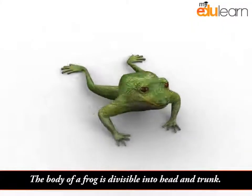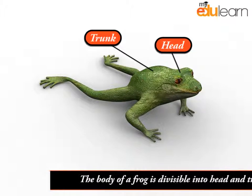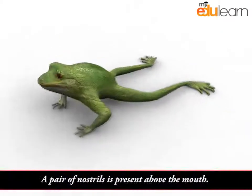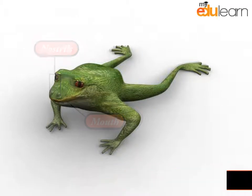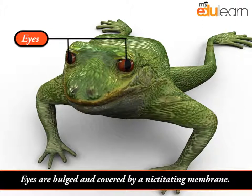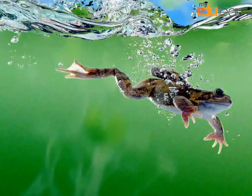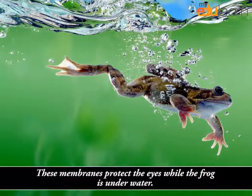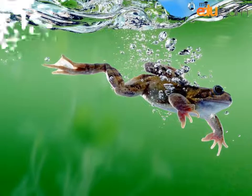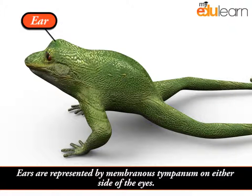The body of a frog is divisible into head and trunk. A pair of nostrils is present above the mouth. Eyes are bulged and covered by a nictitating membrane. These membranes protect the eyes while the frog is underwater. Ears are represented by a membranous tympanum on either side of the eyes.